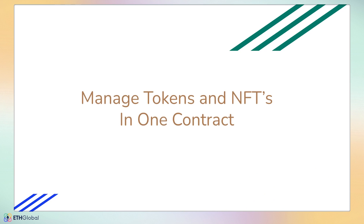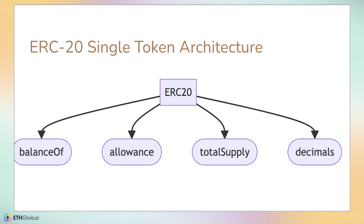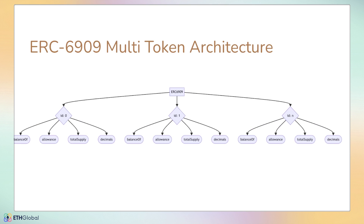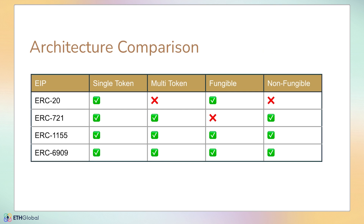Today we're going to be talking about ERC-6909, the minimal multi-token interface. So why multi-tokens — why does this even matter? The big obvious one is you can manage multiple tokens and NFTs within a single contract. ERC-20 is the de facto standard for single fungible tokens — pretty straightforward, tracking balance, allowance, total supply, decimals. ERC-6909 is similar but can track multiple, up to 2^256 minus one of them.